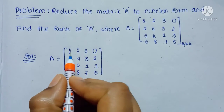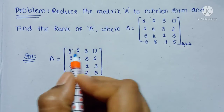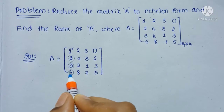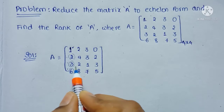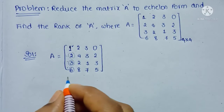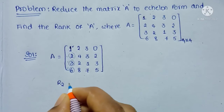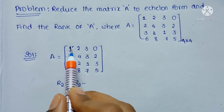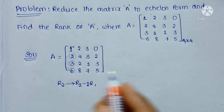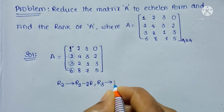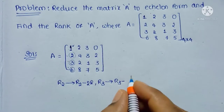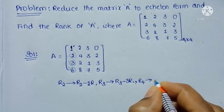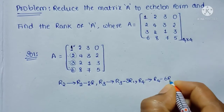Since the first non-zero element is 1, there is no need to change this element. We have to convert the elements 2, 3, and 6 into 0 by row operations. R2 is converted into R2 minus 2R1; R3 is converted into R3 minus 3R1; and R4 is converted into R4 minus 6R1.